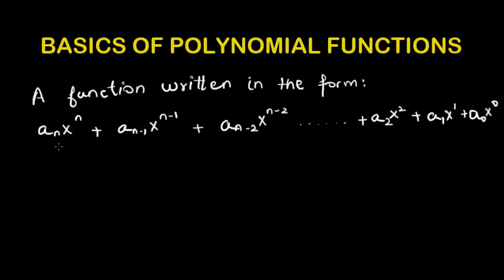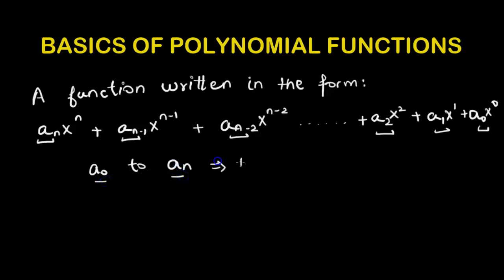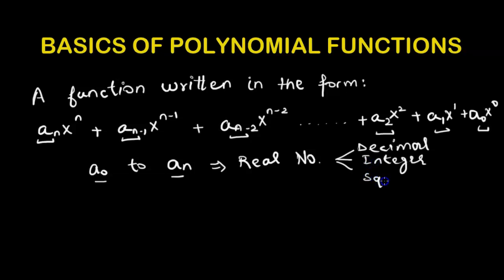The coefficients a_0 through a_n are simply numbers. Starting from a_0 to a_n, each is a real number. A real number can be any decimal number, any integer, or any square root number — essentially any number can take the place of 'a' here.